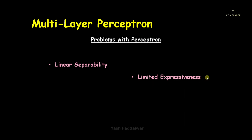The next problem is limited expressiveness. Single layer perceptrons have a limited capacity to represent complex functions — they can only capture linear relationships between inputs and outputs, and that is a major problem.